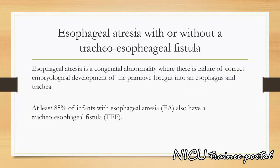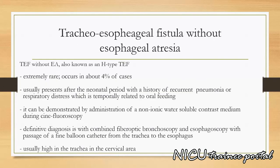Oesophageal atresia is a congenital abnormality where there is failure of correct embryological development of the primitive foregut into an esophagus and trachea. At least 85% of infants with esophageal atresia also have a tracheoesophageal fistula. Tracheoesophageal fistula without esophageal atresia is also known as an H-type fistula, and it is extremely rare, occurring in about 4% of cases.